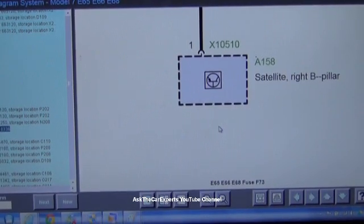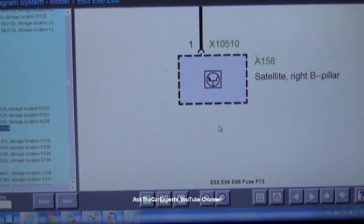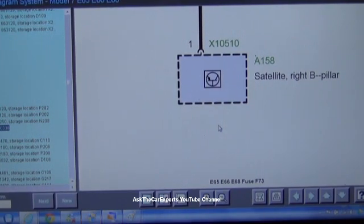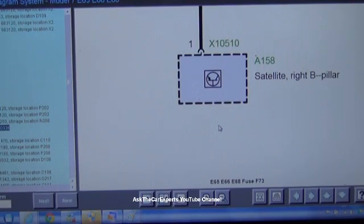You're going to want to disconnect the battery when you are replacing the satellite sensor. I would first take all the panels off like I'm going to show you, and then make sure the battery is disconnected so that you don't set any airbag faults, because this is also a satellite sensor for the airbag system for the bite flight.